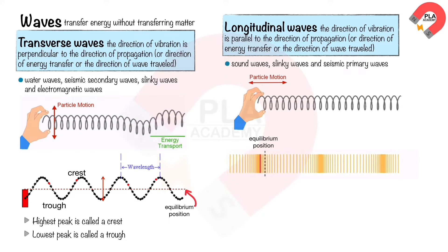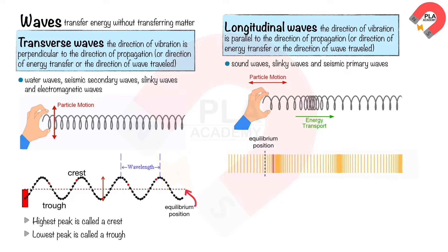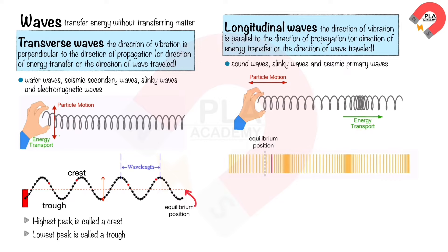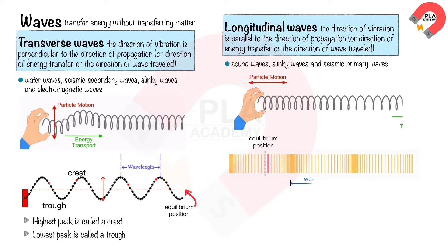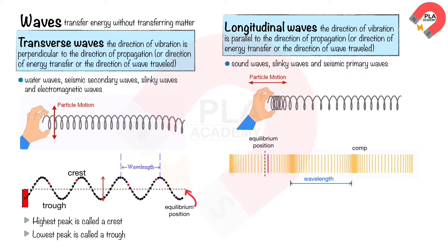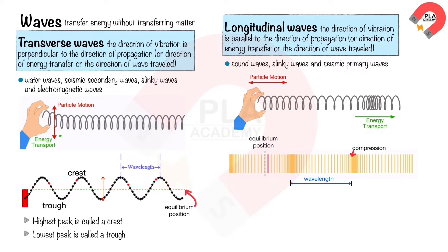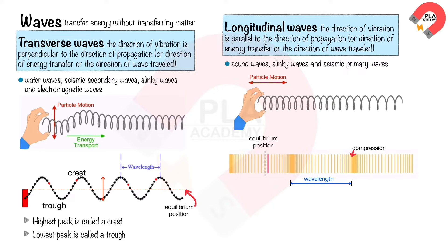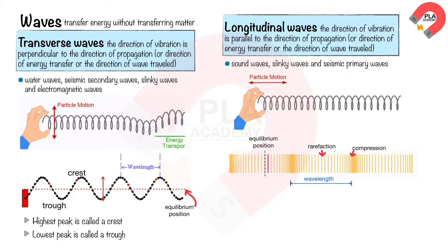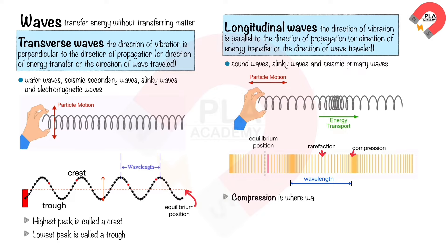When the wave vibrates for one cycle, it creates one wave that travels one wavelength. Where the spring compresses together, this is called a compression. Where the spring extends apart, this is called a rarefaction.